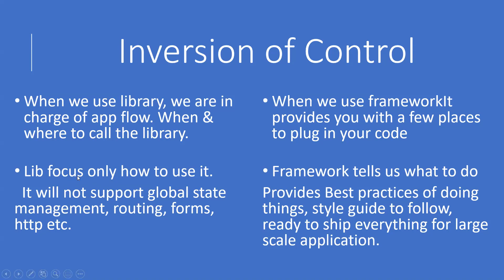A library focuses only on its specific use case. It will not support global state management, routing, forms, or HTTP calls by default — it gives the user the ability to pick whatever library they want. For example, React.js is a library. It uses Redux to maintain global state and Axios to do HTTP calls. With libraries, we have full control over the application.